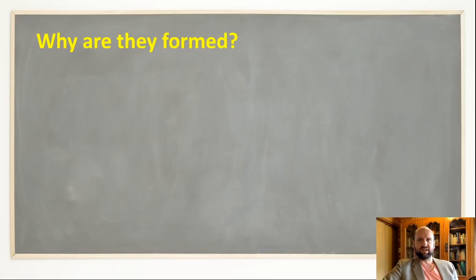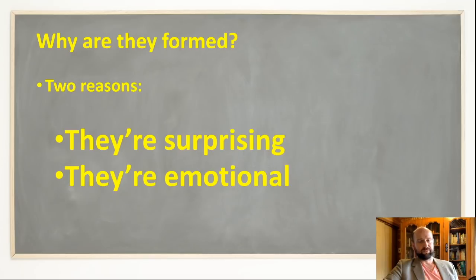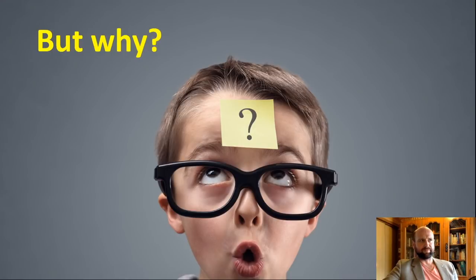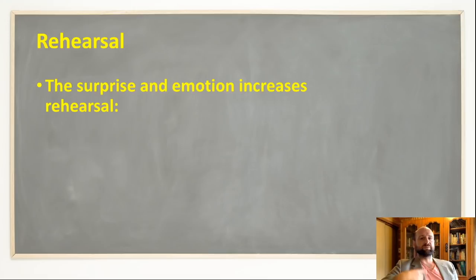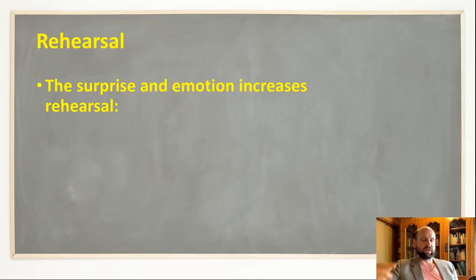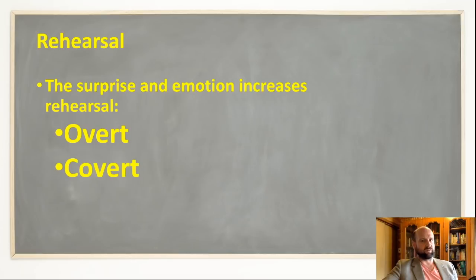Now we get into the explanation — how does emotion affect cognition? According to the theory, two reasons: they're surprising and they're emotional. These are the two factors that lead to flashbulb memory formation. The key mechanism is rehearsal. If something is surprising and emotional, it's going to increase the amount you rehearse the details of where you were when you found out. And we know from research that the more rehearsal you have, the stronger the memory trace in your brain.